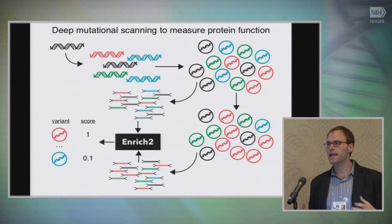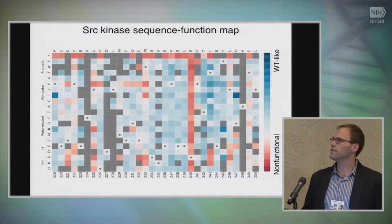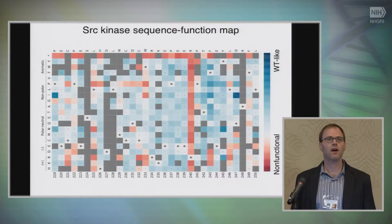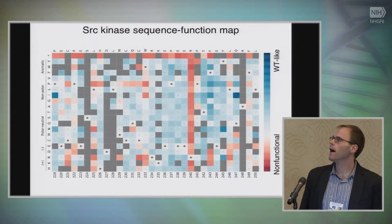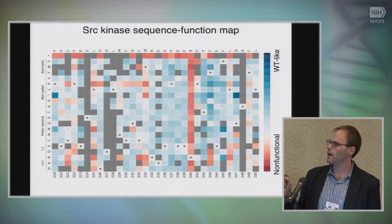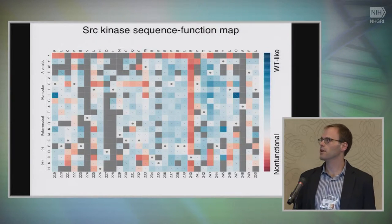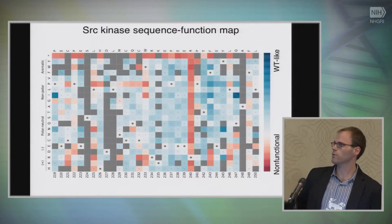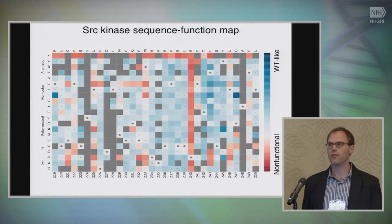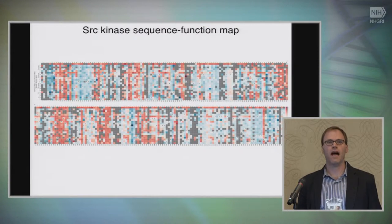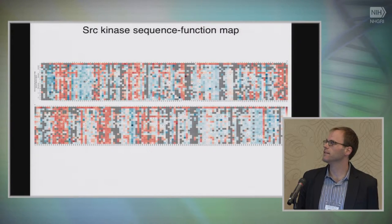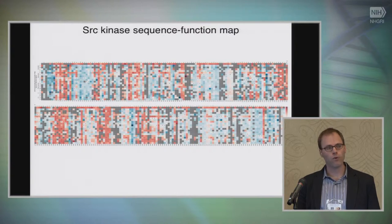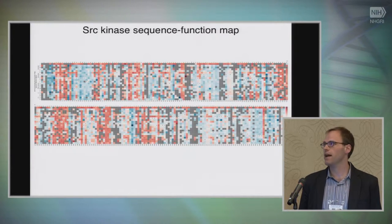What you get out of a deep mutational scan is essentially a sequence function map. This example is for SART kinase, which is the dataset we've most recently generated. For a snippet of SART kinase from position 219 to position 250, you can see the functional consequences in this assay of all — or at least many — of the possible amino acid exchanges. Some positions are tolerant and other positions are sensitive. We can do this now on the scale of whole, reasonably sized genes. These sequence function maps will be particularly helpful for scaling functional assays to assist in interpreting variants found in genomes.